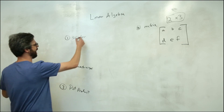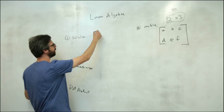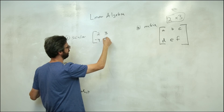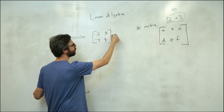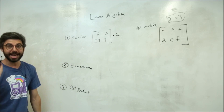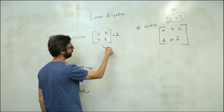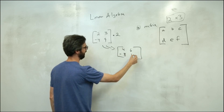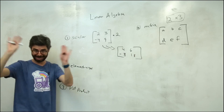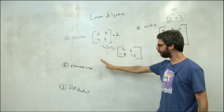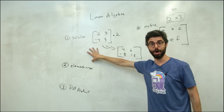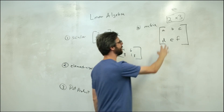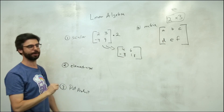Let's look at a scalar operation for a matrix. If I have the matrix [[2, 3], [-4, 9]] and multiply by the number 2, a scalar operation doubles all the values, giving [[4, 6], [-8, 18]]. Let's pause for a second and start to write some code. I want a library that lets me create a matrix and perform a scalar operation on it.